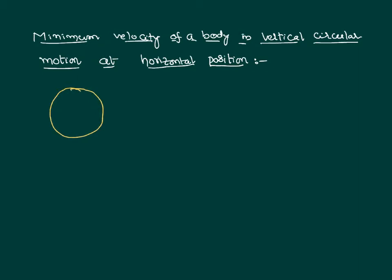Here in this lesson we would like to calculate: if a body of mass M is in vertical circular motion, attached to a string of length r, and it is moving with a minimum velocity — we have proved in previous cases that the velocity at the bottom, the least value required, is root(5Rg). If the velocity is less than this, the body cannot continue its vertical circular motion. So let this be the minimum velocity with which the body is moving in an anti-clockwise direction in circular motion.